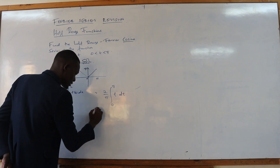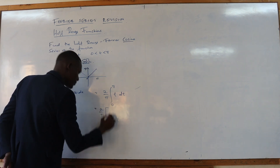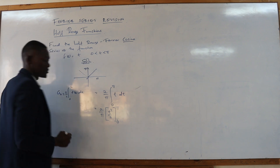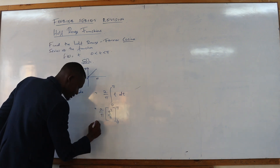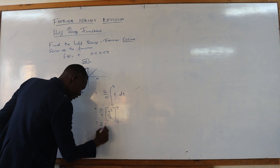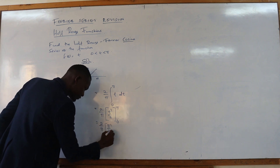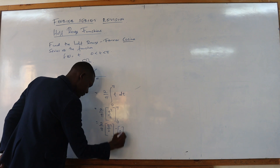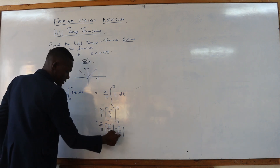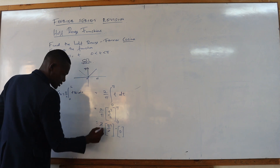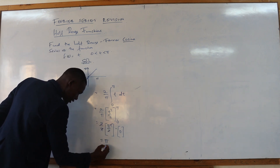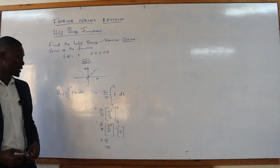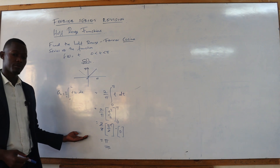Integrating this, we have 2 over π — remember, increase the power by 1, divided by the new power — with limits from 0 to π. So we input our upper and lower limits: 2 over π times (π² over 2 minus 0). The 2 and the 2 cancel, and the π and π cancel, so you remain with the answer being π. So your A0 is given by π.